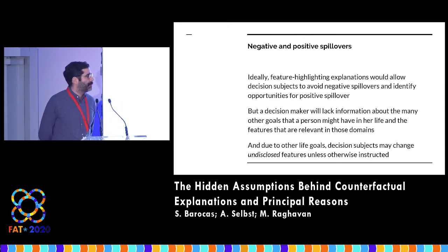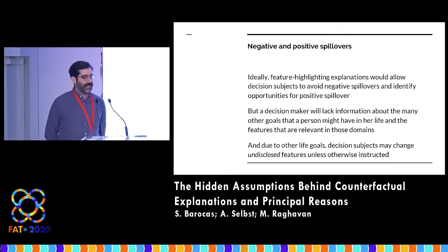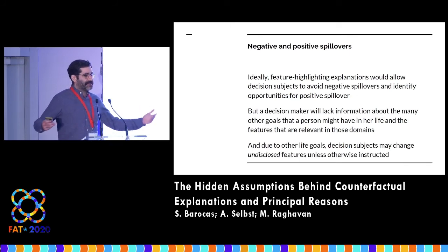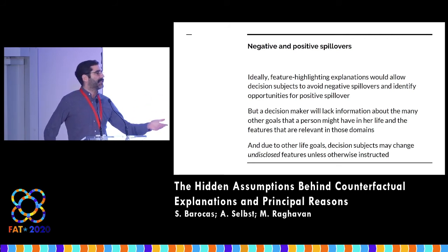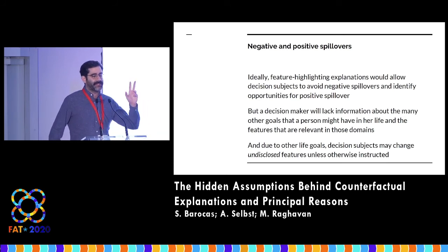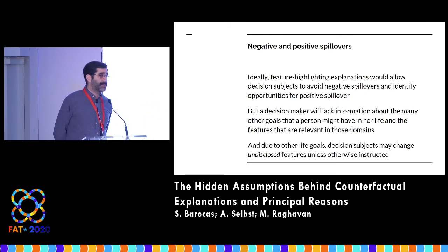Ideally, what we would want to be able to do is help people identify when there are positive spillovers so they can make decisions that have value across multiple domains and avoid negative spillovers. But the decision maker tasked with giving this explanation will often not have that information. It's also going to be possible that because people have other life goals, they will actually make changes to features that are included in the model but not disclosed as particularly relevant to the decision — because they weren't dispositive — but still nevertheless play a role. And unless people are told not to change those features, it's very likely they'll have other reasons in their life to do so.